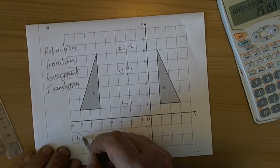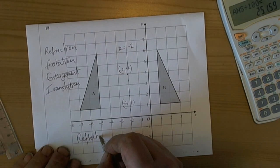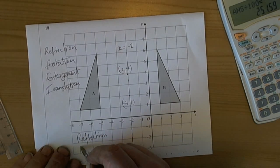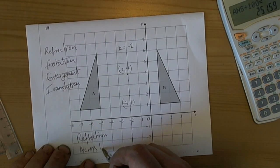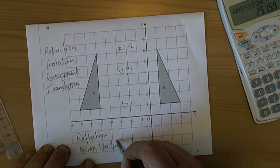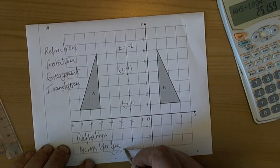So the answer to this, you have to get the two marks by writing reflection for one mark, and then you say where you've reflected it. So we've reflected it across the line x equals minus 2.